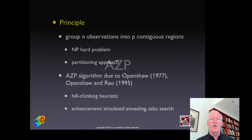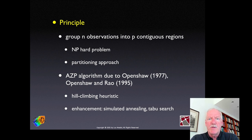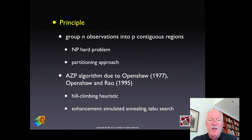AZP stands for Automatic Zoning Procedure, or initially Automatic Zoning Problem. The idea is to group n observations into p contiguous regions. This is a very difficult, NP-hard problem. We use a partitioning approach—an iterative reallocation approach. The initial AZP algorithm was an aggressive, greedy, hill-climbing heuristic.